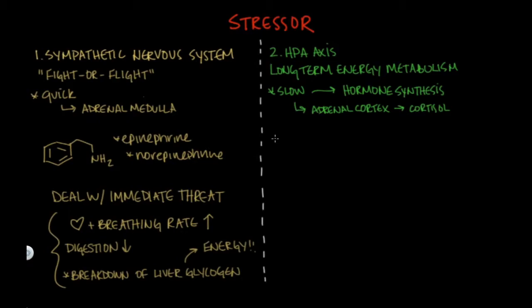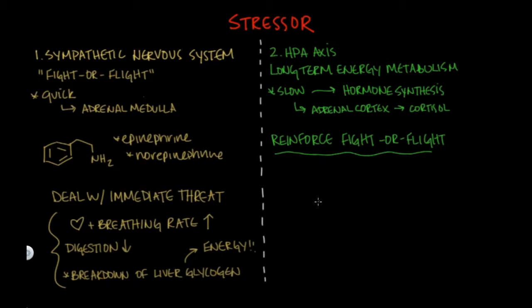We often see the HPA axis referred to as the 'resistance phase,' referring to its role in reinforcing the initial response by your sympathetic nervous system. At some point during the fight-or-flight response, the glycogen stores in your liver will eventually run out, and so one of the roles of the HPA axis is to sustain your blood glucose levels to support your central nervous system during stress.